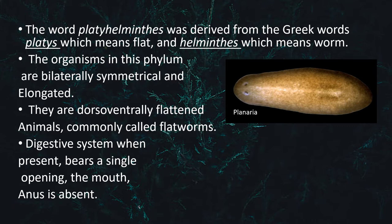The word Platyhelminthes was derived from the Greek word 'platys,' which means flat, and 'helminthes,' which means worm. They are bilaterally symmetrical and elongated, as seen in this planarian.